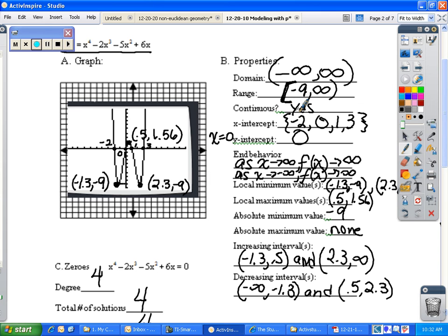It is continuous, there are no breaks. X-intercepts are your zeros of the function, so therefore in this graph, it hits the x-axis at negative 2, 0, 1, and 3. Notice I have written those as a set of numbers.